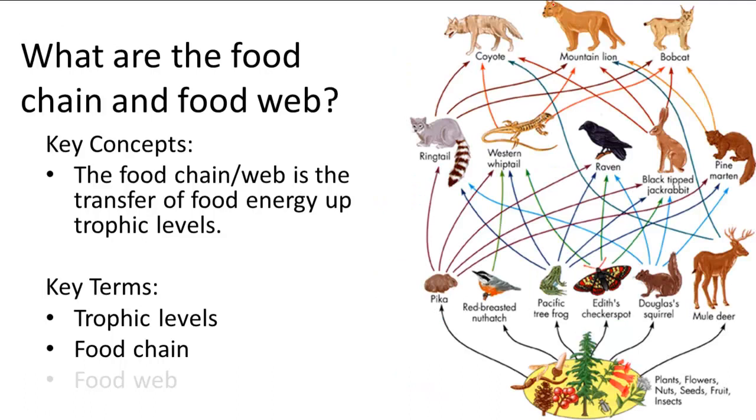And the food web shows all the different relationships and energy flows in an ecosystem, or at least it tries to. So you can see all these different predator-prey relationships and starting here from the producers, it flows into all these different types of primary consumers. And these primary consumers are eaten by all different types of secondary consumers and tertiary consumers.